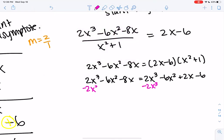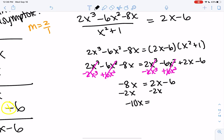Minus 2x³ cancels out. So we just have minus 8x equals 2x minus 6. So minus 2x. So negative 10x is negative 6. So x is 6 tenths or 3 fifths or 0.6. So that's when it crosses.